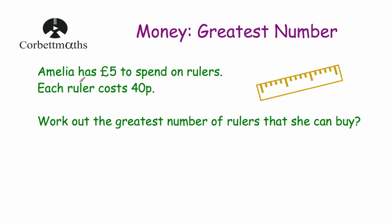Here's our example: Amelia's got £5 to spend on rulers, and each ruler costs 40p. The question says work out the greatest number of rulers that she can buy. So Amelia's got £5 and she wants to buy as many rulers as she can, and each one costs 40p. We can do this in a couple of different ways — one way would be to take the £5 and divide it by 40p to find how many rulers she could buy.